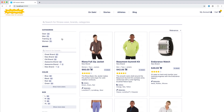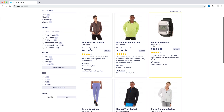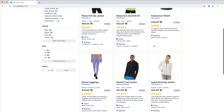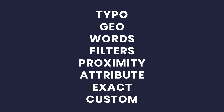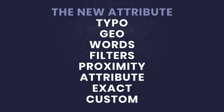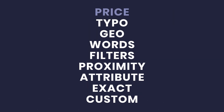Let's get back to our e-commerce store. Let's say we want to sort products by price in order to see the most affordable items first. To achieve that, we use the set settings method to edit the ranking attribute. We keep the eight rules of the default ranking formula, and at the very top, we add the new attribute to sort by. As the ranking formula follows the tie-breaking algorithm, our price attribute will take precedence over all the other rules.